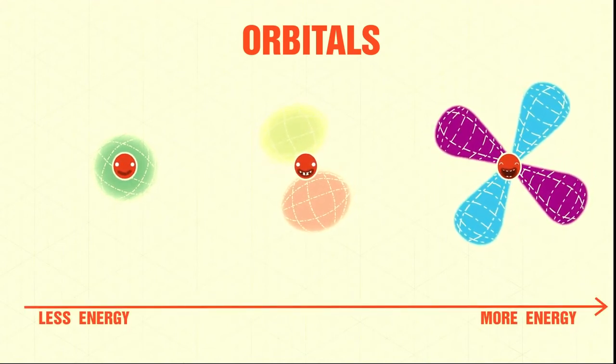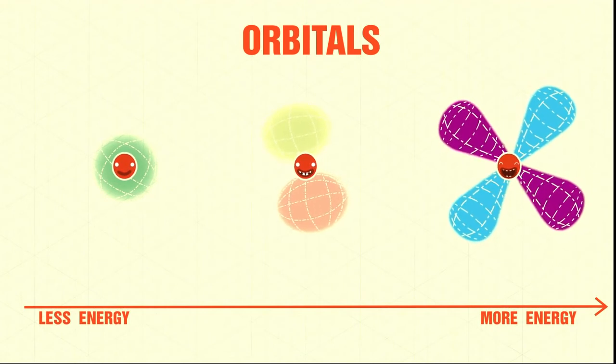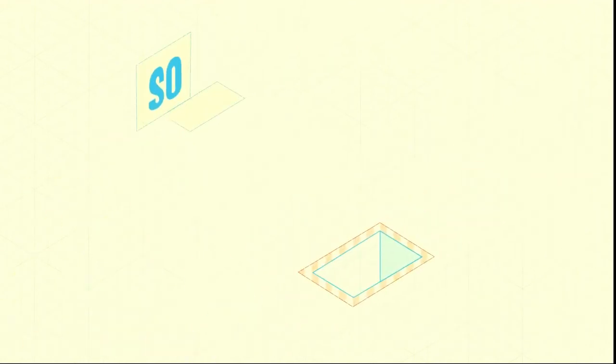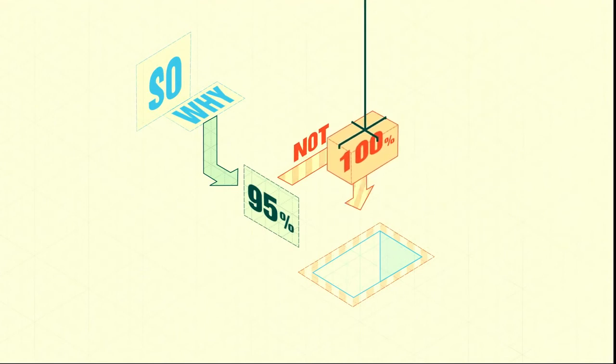The more energy an orbital has, the farther most of its density is from the nucleus. By the way, why did we pick 95% and not 100%?